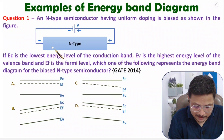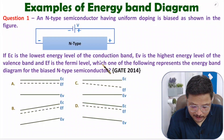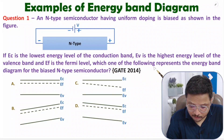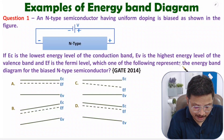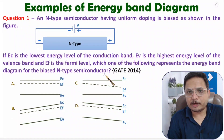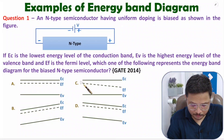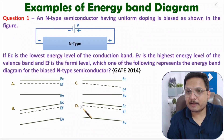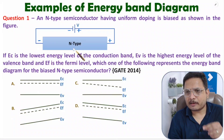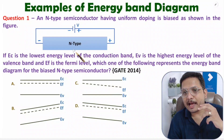Here Ec is the lowest energy level of the conduction band, Ev is the highest energy level of the valence band, and Ef is the Fermi level. We need to identify which of the four options represents the correct energy band diagram for this biased n-type semiconductor.